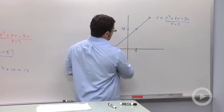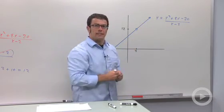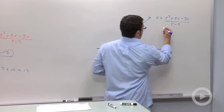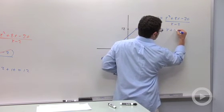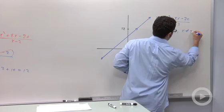This function's graph is basically a line with a hole in it at x equals 2. And you could rewrite this function as y equals x plus 10 for x not equal 2.